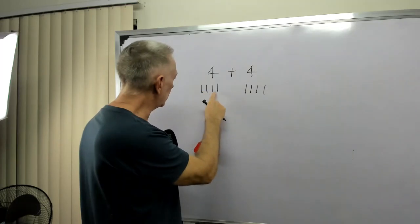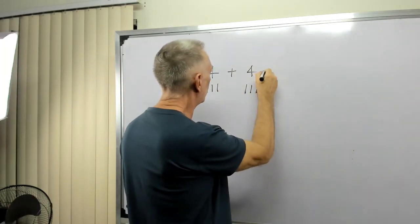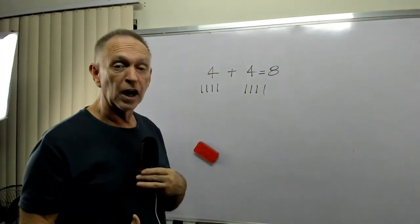One, two, three, four, five, six, seven, eight. Four plus four equals eight. It's not so bad.